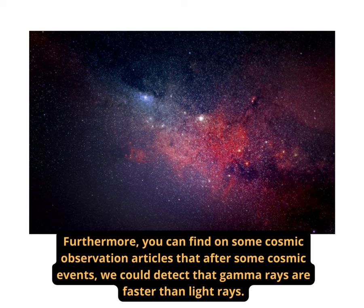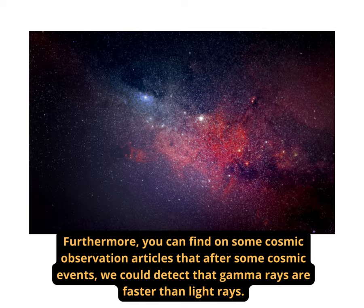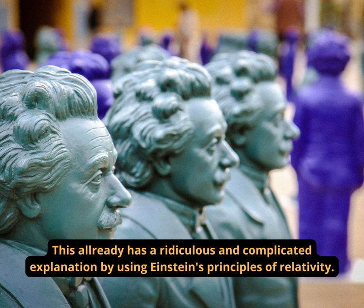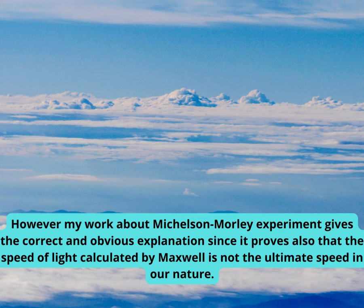Furthermore, you can find on some cosmic observation articles that after some cosmic events, we could detect that gamma rays are faster than light rays. This already has a ridiculous and complicated explanation by using Einstein's principles of relativity. However my work about Michelson-Morley experiment gives the correct and obvious explanation since it proves also that the speed of light calculated by Maxwell is not the ultimate speed in our nature.